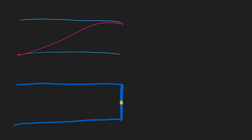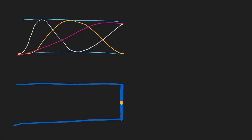Now let me draw the second harmonic. It still has to have an antinode on both ends, so it looks like this. And then the third harmonic looks like this. Essentially, we're looking for the smallest waves that will fill the tube and still have antinodes on both ends.